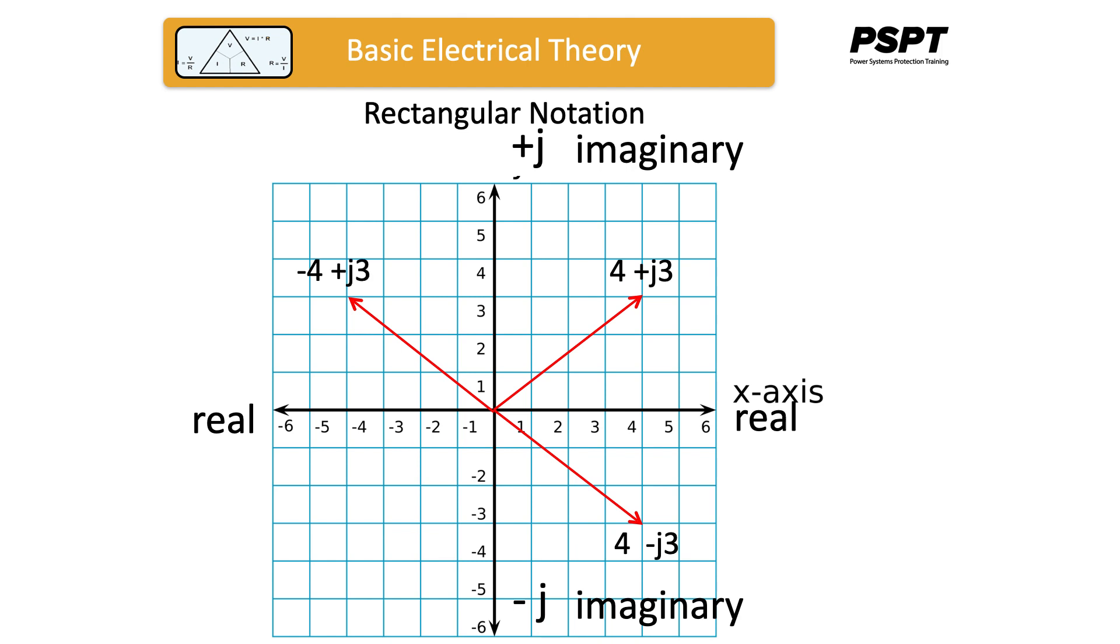Here are some examples of phasors in rectangular notation. Notice this time there is only one way to distinguish the phasor. They are uniquely described by the two figures. The one in the first quadrant, upper right-hand side of the graph, is 4 plus j3, which means it's 4 along the real axis and 3 along the imaginary axis, as denoted by plus j in front of the 3. The one in the left-hand side, upper left-hand side of the graph, is minus 4 plus j3, so minus 4 is along the real axis but in the minus direction, 4. And the 3 is along the plus j or imaginary axis, 3 in that direction, that vector is made up of minus 4 plus j3.